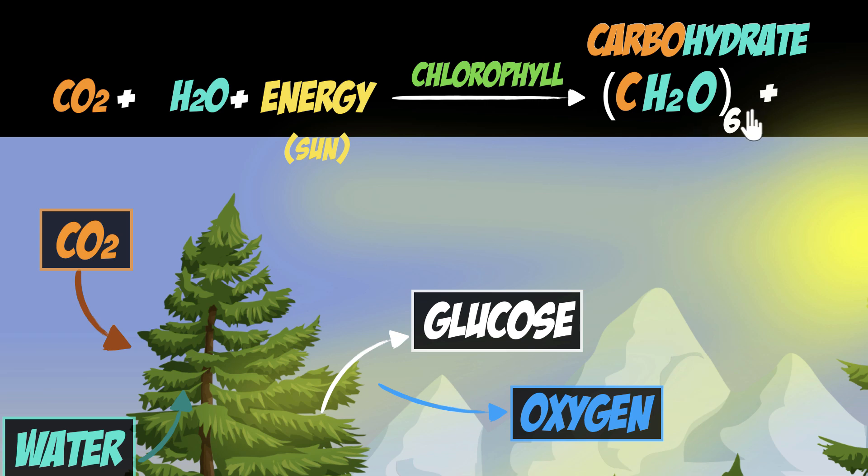And what else do we get? We get glucose and what else? We also get oxygen. So plus O2. And we'll see why I've written O2 in this particular color. Okay? So this is our photosynthesis chemical reaction.